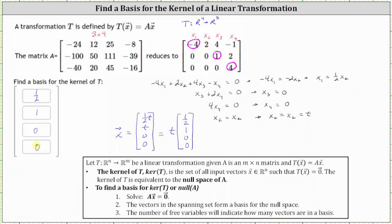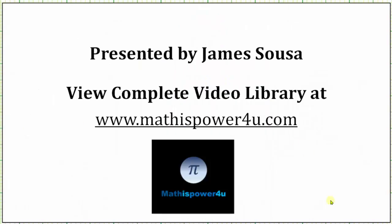We could also say the kernel of T, or the null space of A, is equal to the span of the vector one half, one, zero, zero, which means all the scalar multiples of this vector are the input vectors where T of vector x is equal to the zero vector. I hope you found this helpful. Thank you.